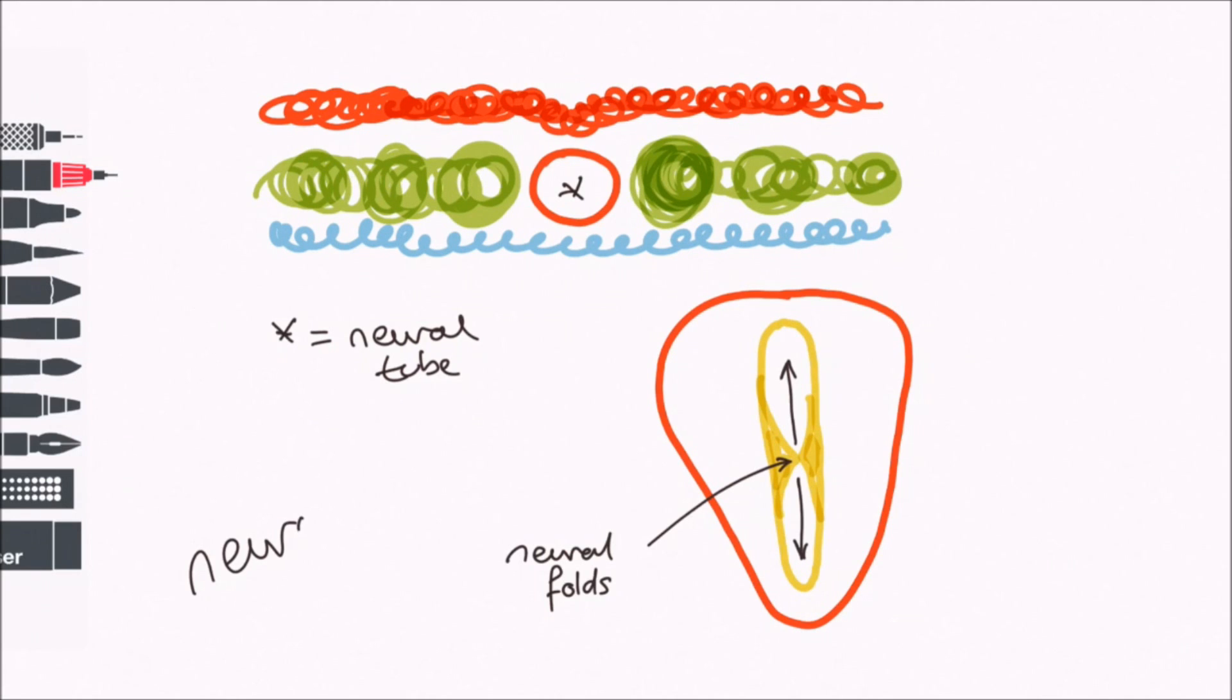This whole process is called neurulation. Looking at it from the transverse perspective again, in the neural tube, the dorsal portion is called the alar plate and will form the sensory area of the spinal cord. The ventral portion is termed the basal plate and forms the motor area of the spinal cord.